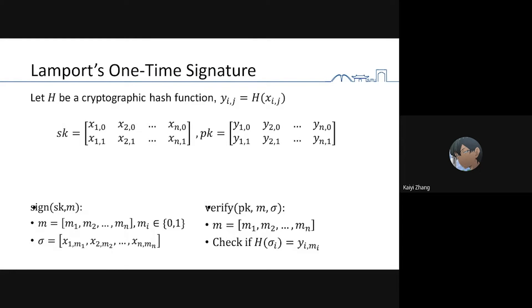Let's move to Lamport's one-time signature. Suppose H is a cryptographic hash function. We first generate two n random numbers denoted by X; they are the secret key. We hash them to obtain the public key, denoted by Y. To sign a message M, we first decompose M into binary and release corresponding X as the signature.